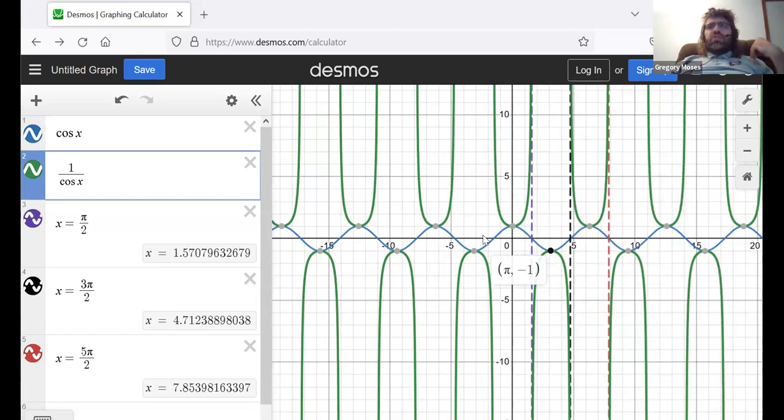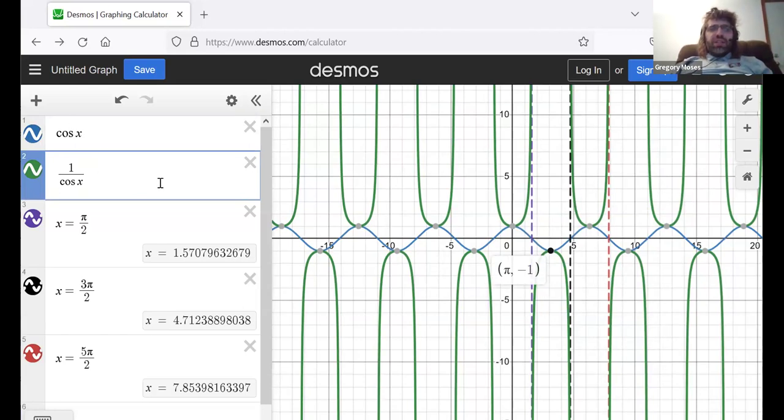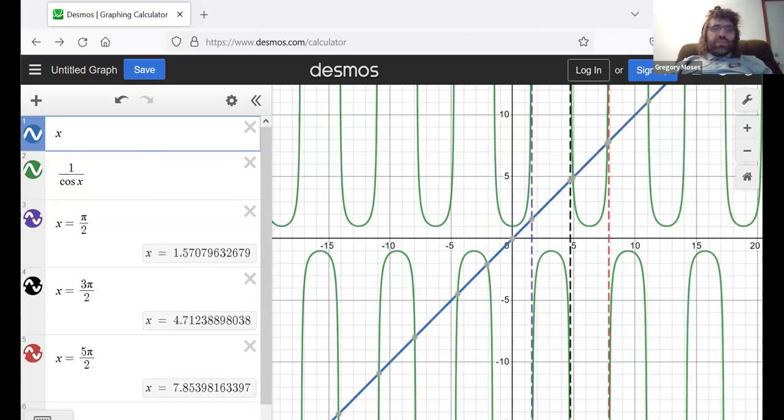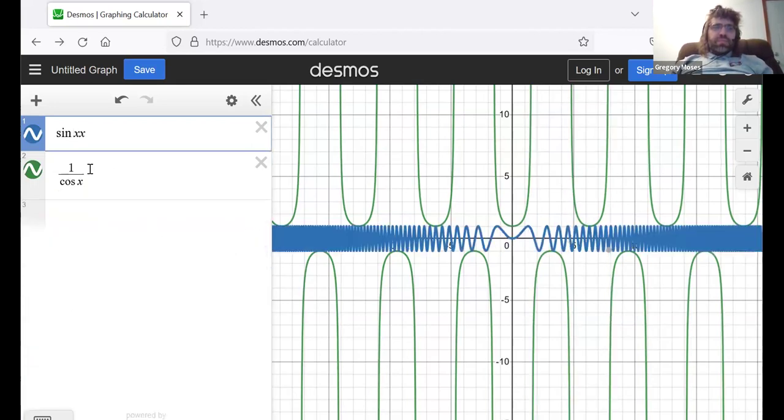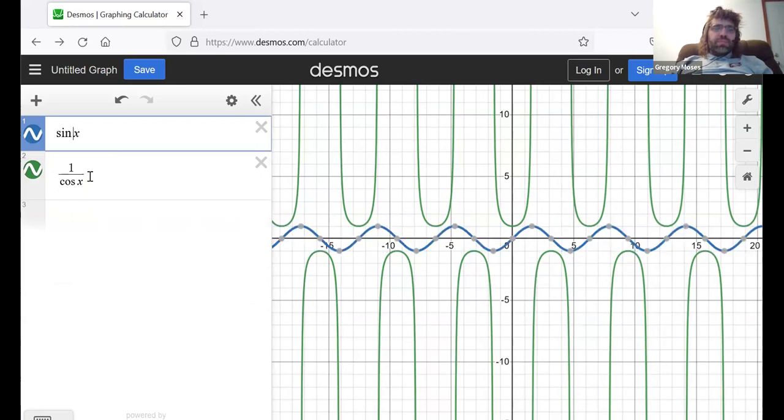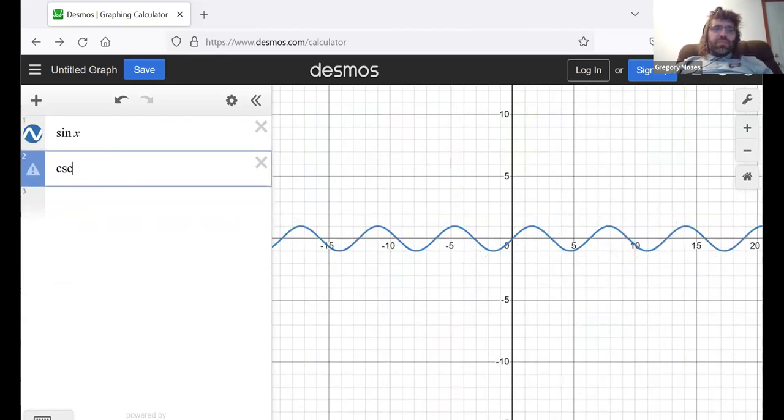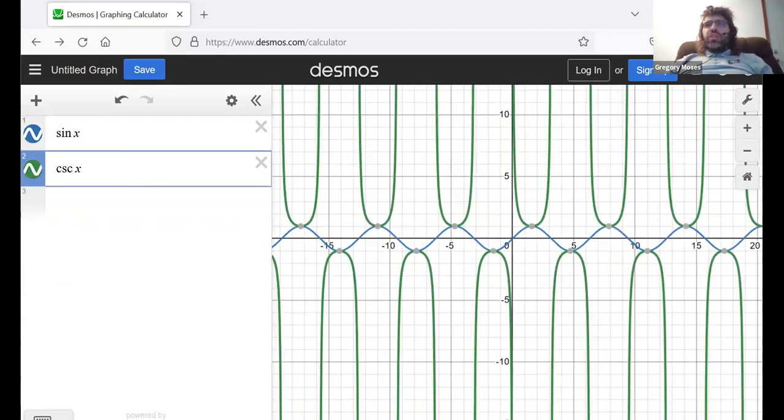So, that's the secant. Here is the cosecant. And the exact same pattern repeats. So, let's try to summarize that.